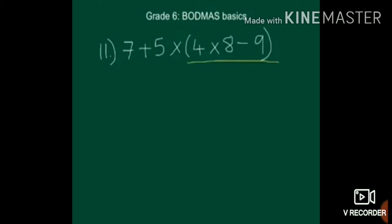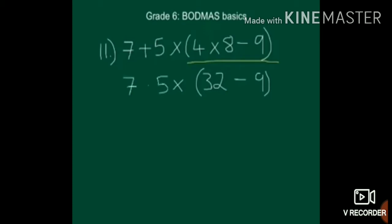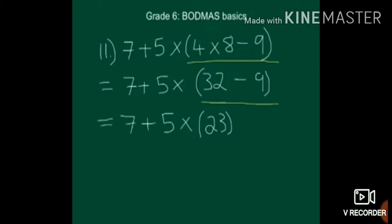First you have to remove the brackets. To remove the brackets, simplify what is given inside. That is 4 into 8. How much is 4 into 8? You multiply 4 into 8, that is 32. Then 32 minus 9. So 7 plus 5 into 32 minus 9. How much is 32 minus 9? That is 23. By simplification, the brackets are removed: 7 plus 5 into 23.